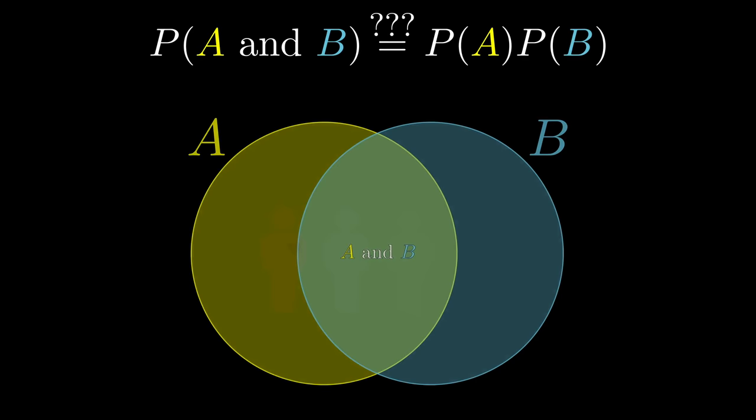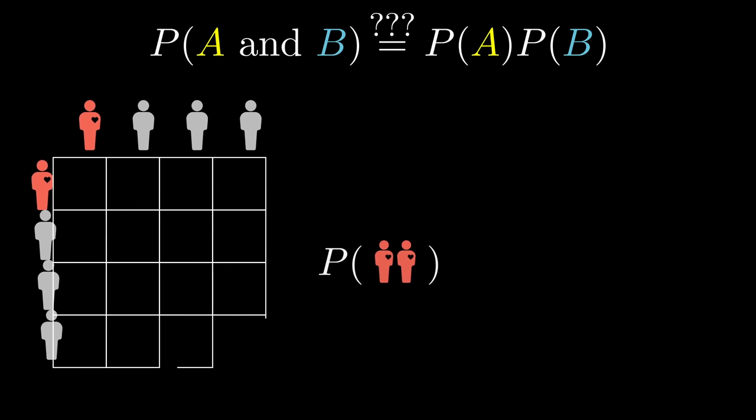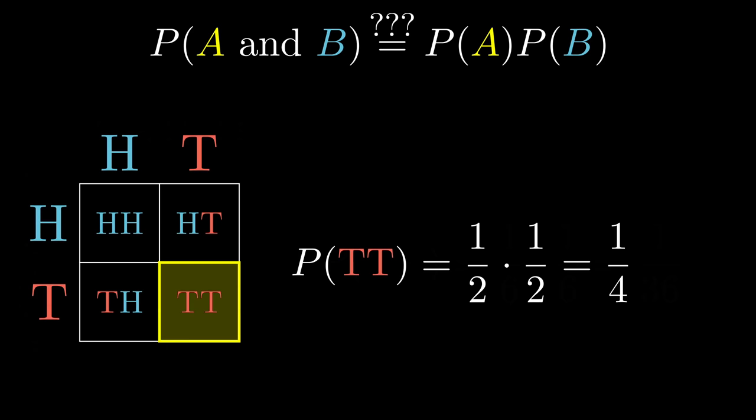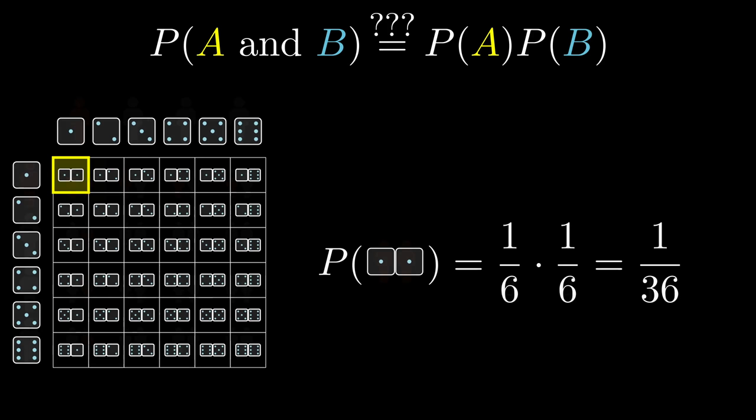For example, if you hear that 1 in 4 people die of heart disease, it's really tempting to think that that means the probability that both you and your brother die of heart disease is 1 in 4 times 1 in 4, or 1 in 16. After all, the probability of two successive coin flips yielding tails is ½ times ½, and the probability of rolling two 1's on a pair of dice is 1 sixth times 1 sixth, right?